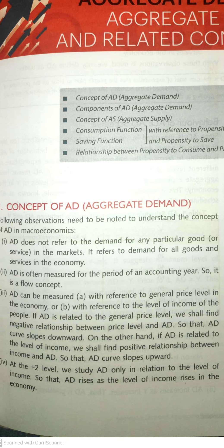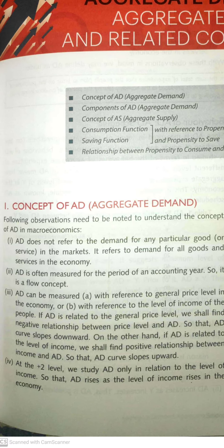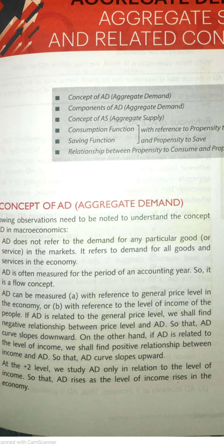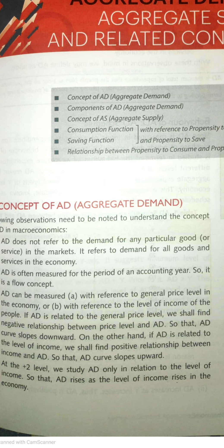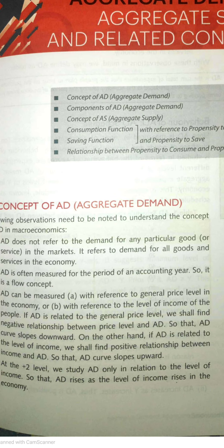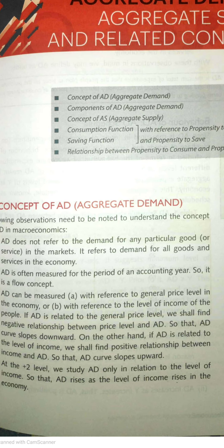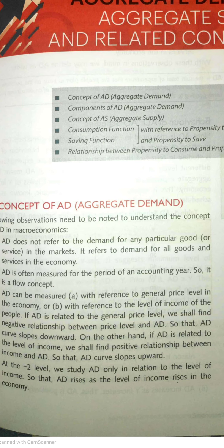The second factor is the level of income of the people living in the economy. Recalling the law of demand, there is an inverse relationship between price and demand — as price increases, demand falls. Similarly, there is a negative relationship between the general price level and aggregate demand.